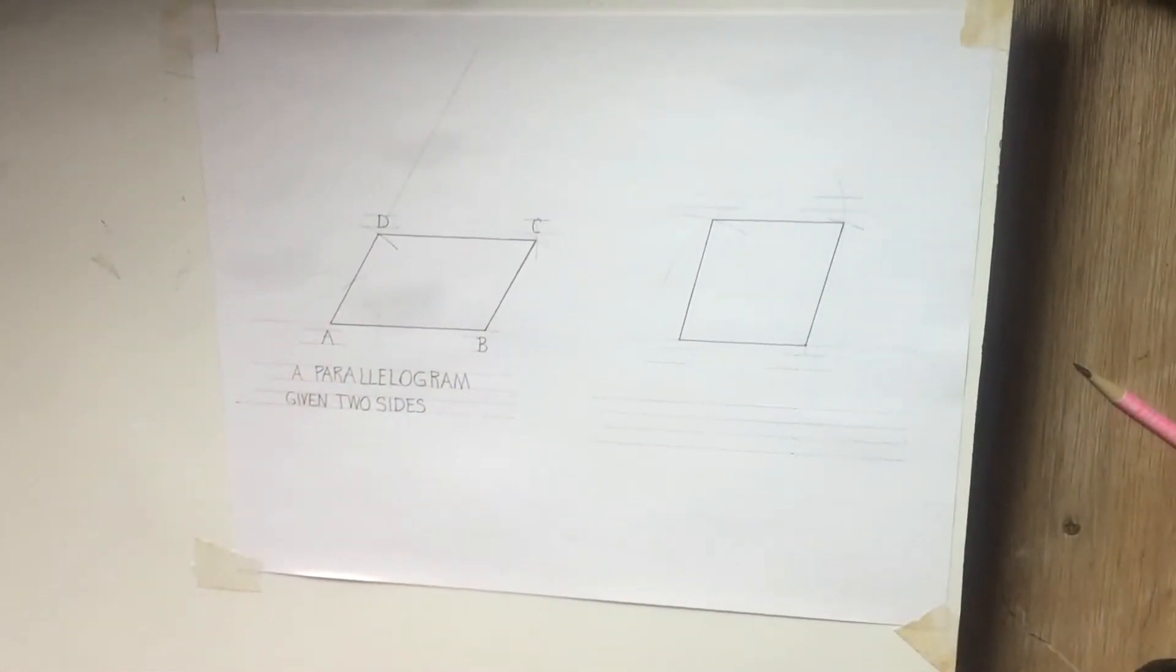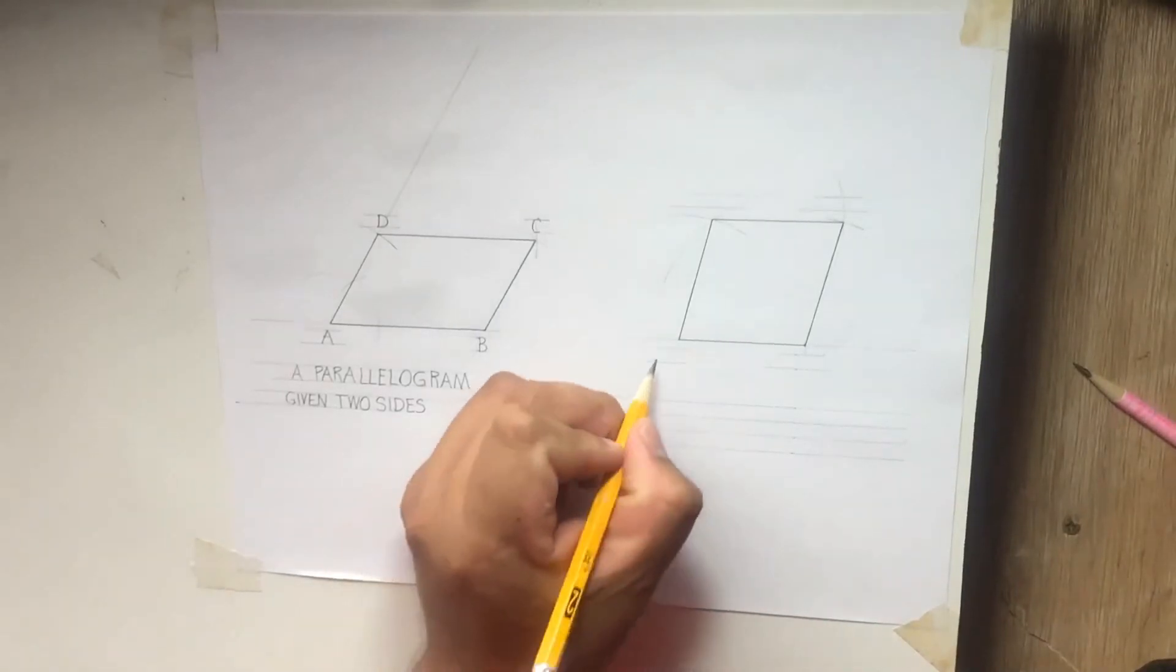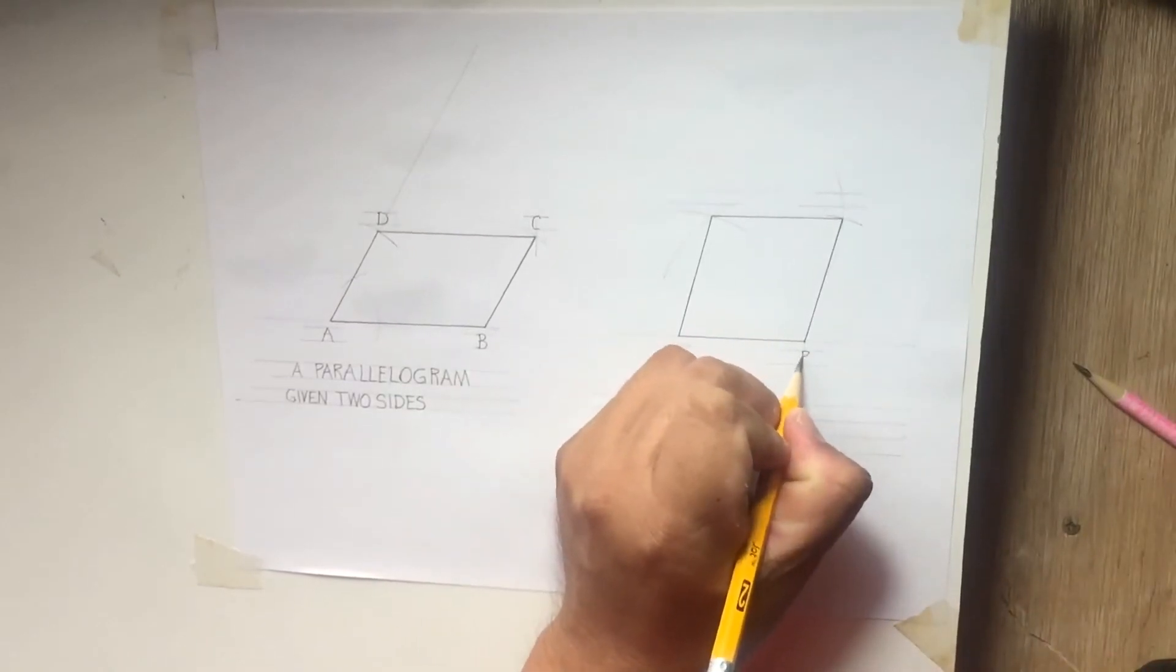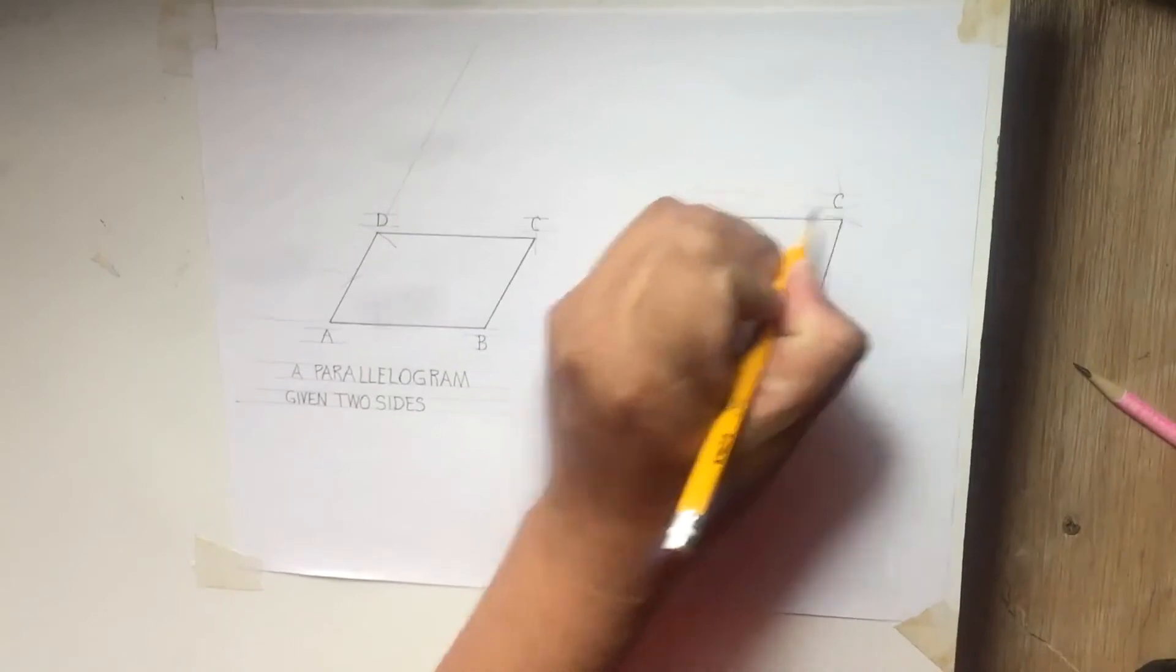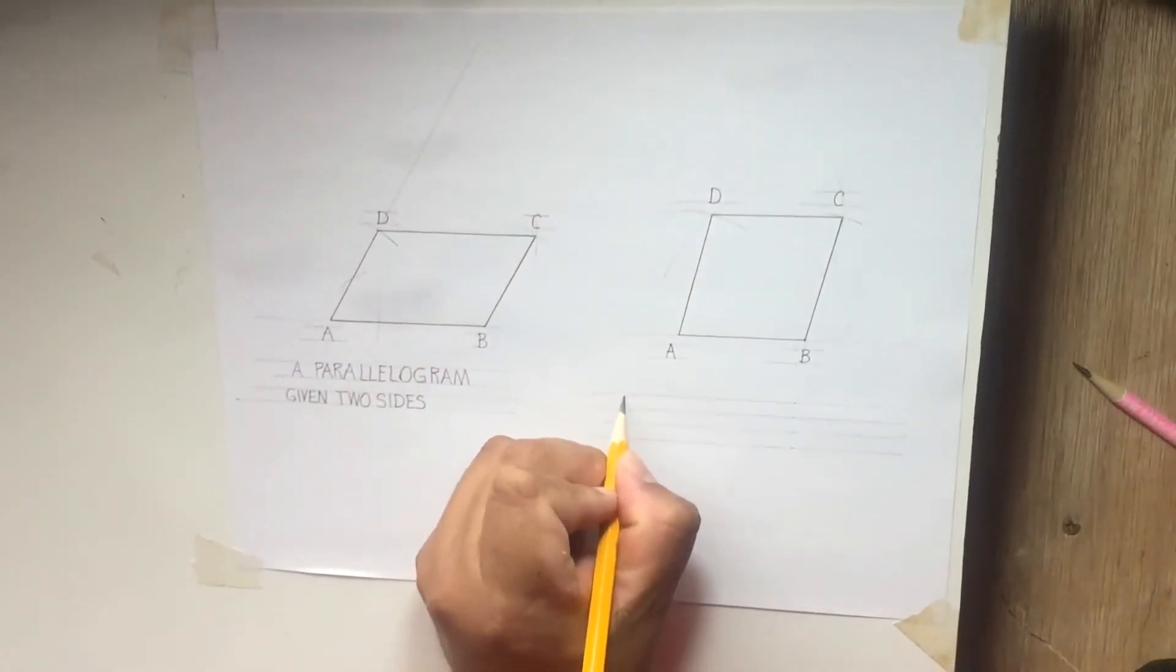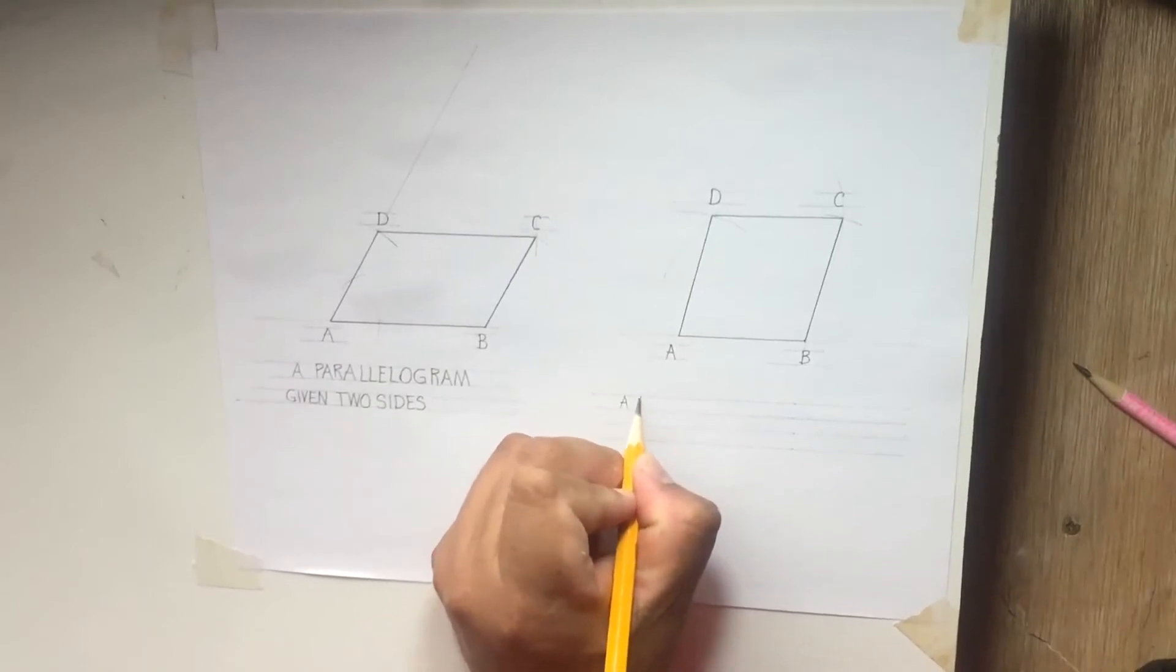And then the lettering is A, B, C, D. Then you write a rhombus.